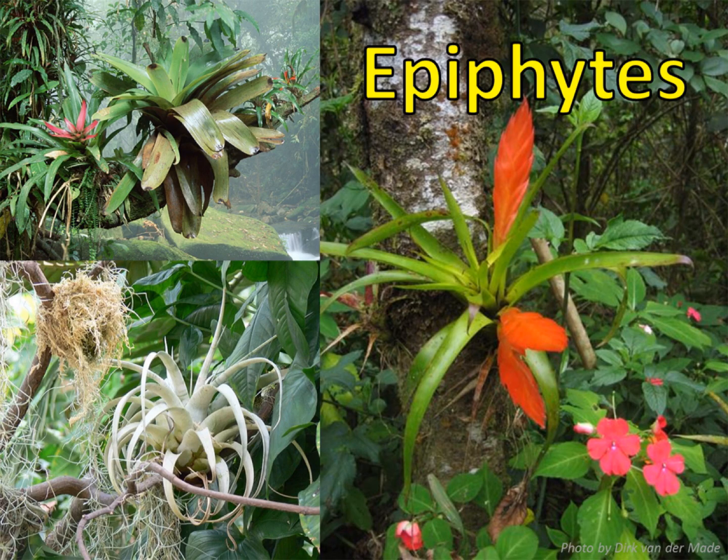And some plants, like these epiphytes, actually grow above the ground on trees. By growing on a tree trunk, these plants are able to receive more sunlight. Their aerial roots wrap around the trunk of the tree, securing the plant to the trunk, and absorbing water and minerals that run down the tree as it rains.